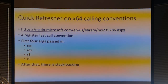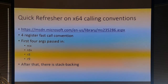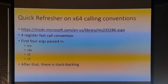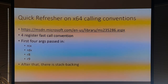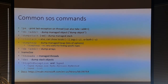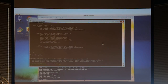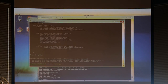Quick refresher on x64 calling conventions. Microsoft uses a four-register fast call convention with stack backing. The first four arguments will be in RCX, RDX, R8, and R9 — they go in registers so things are fast — and if you've got more after that, you'll start going stack pointer plus some offset. This is useful because as you're working through breakpoints and writing conditionals, you need to know where the data is. On x86 it uses the stdcall convention; on x64 it's fast call with the first four registers then stack backing.